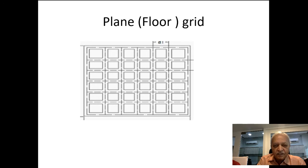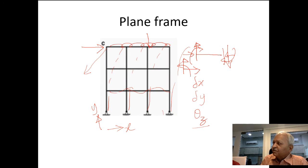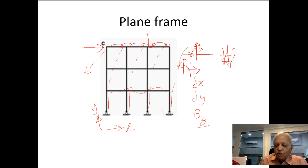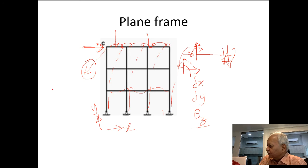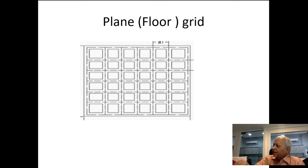A plane grid system is a structure in one plane, like a floor grid. The difference from a plane frame is that for a plane frame the load is in the same plane (horizontal or vertical in-plane forces only), while for a plane grid the load is applied perpendicular to the plane — similar to a floor system where vertical loads act on a horizontal grid.